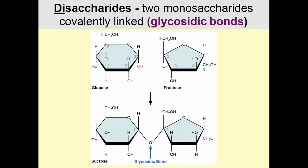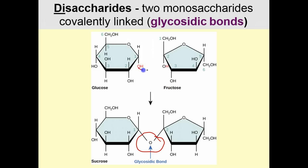Now we're going to talk about disaccharides, which are two monosaccharides covalently linked. The bond that links these two monosaccharides is called the glycosidic bond. This is a dehydration reaction because we're losing OH and H, which form water. Here we have glucose and fructose joined together with a glycosidic bond, and this forms sucrose — more commonly known as table sugar.